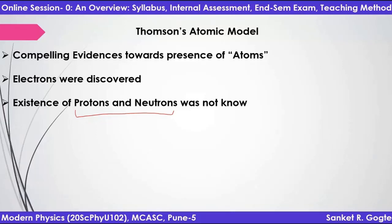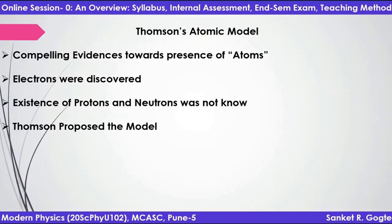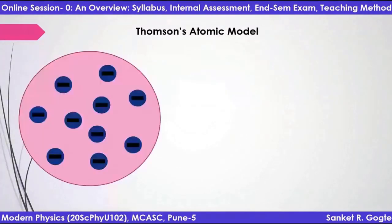I'm talking about some 120 to 140 years back. Based on whatever knowledge and experimentation was there, a theory was needed. If atoms exist, then someone has to put forward what can be the structure of atoms. Thomson, who discovered the electron, was the first one to propose the atom.